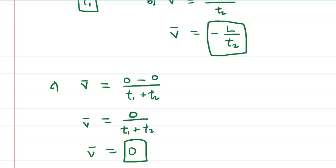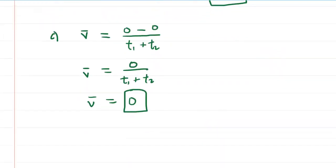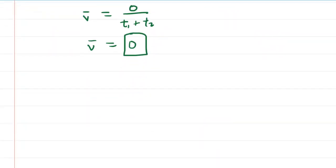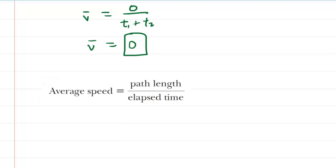So the correct answer to part C is 0. Now, on to part D, which asks for her average speed for the round trip. Average speed has a different formula: the average speed equals the path length divided by the elapsed time.